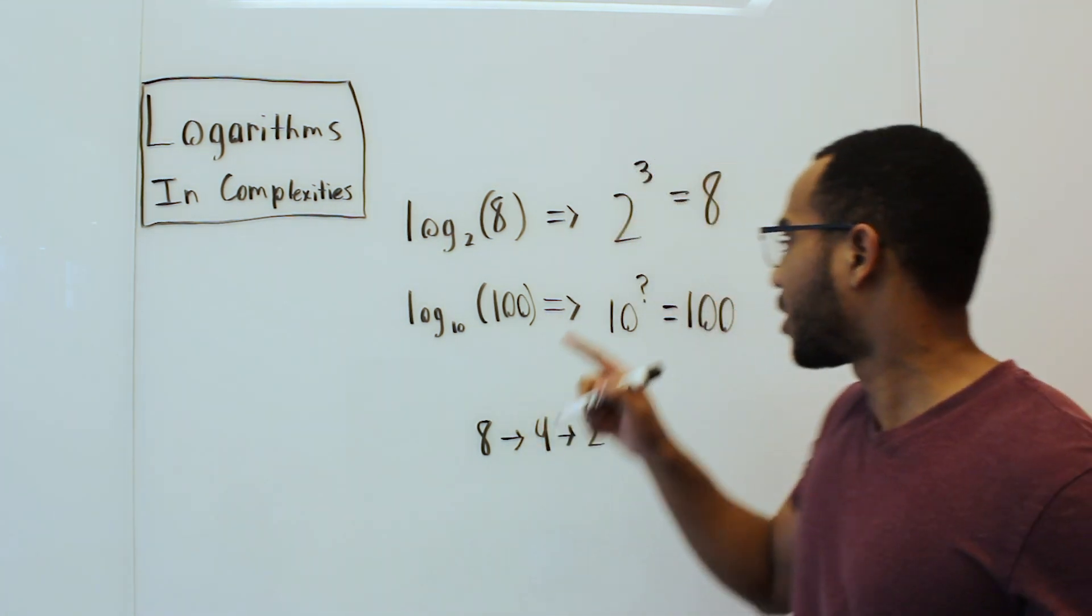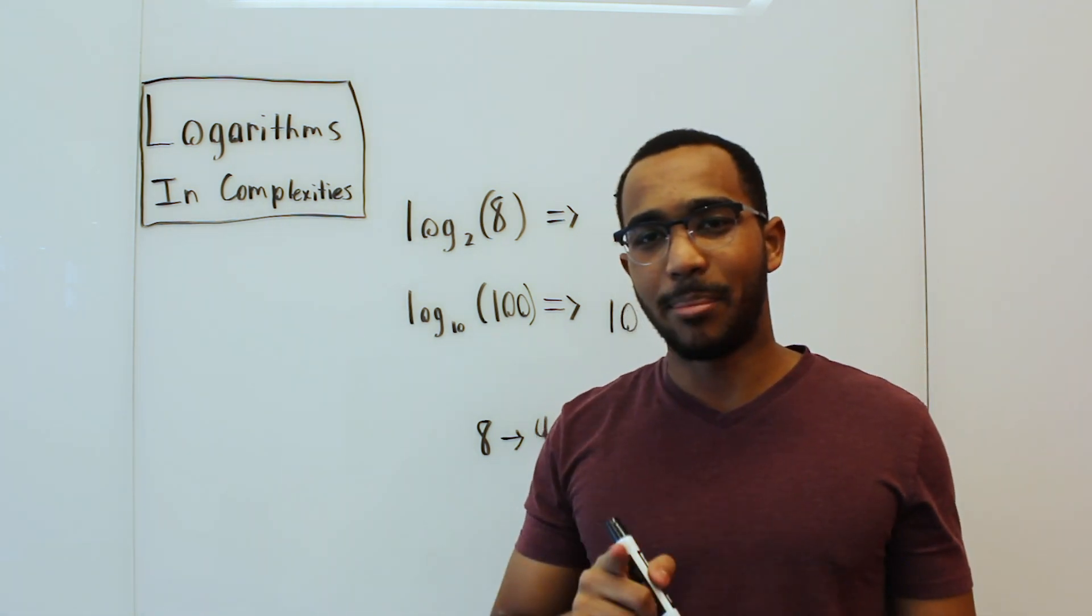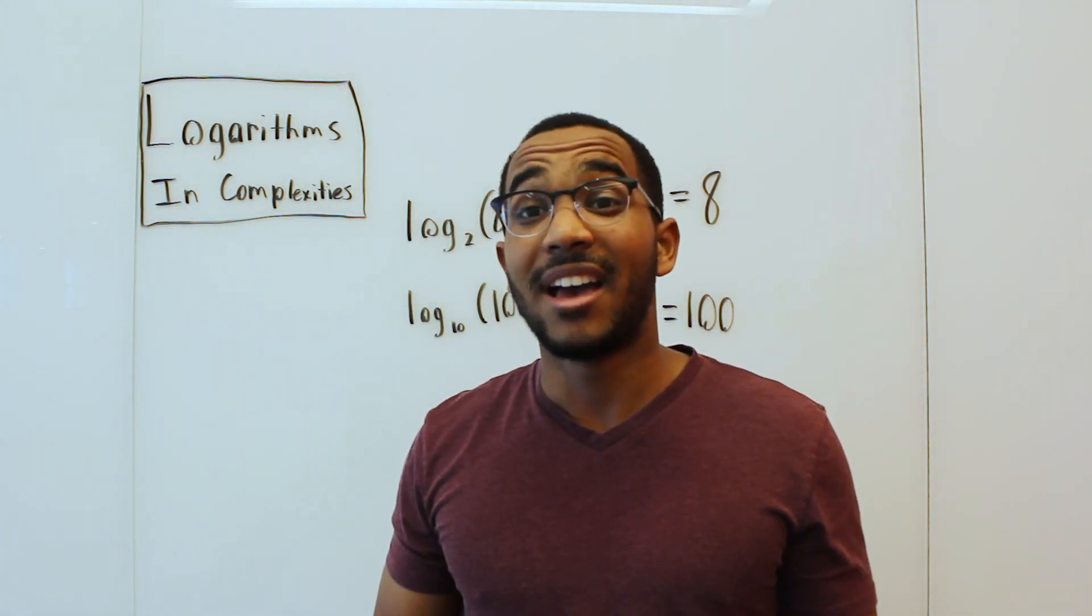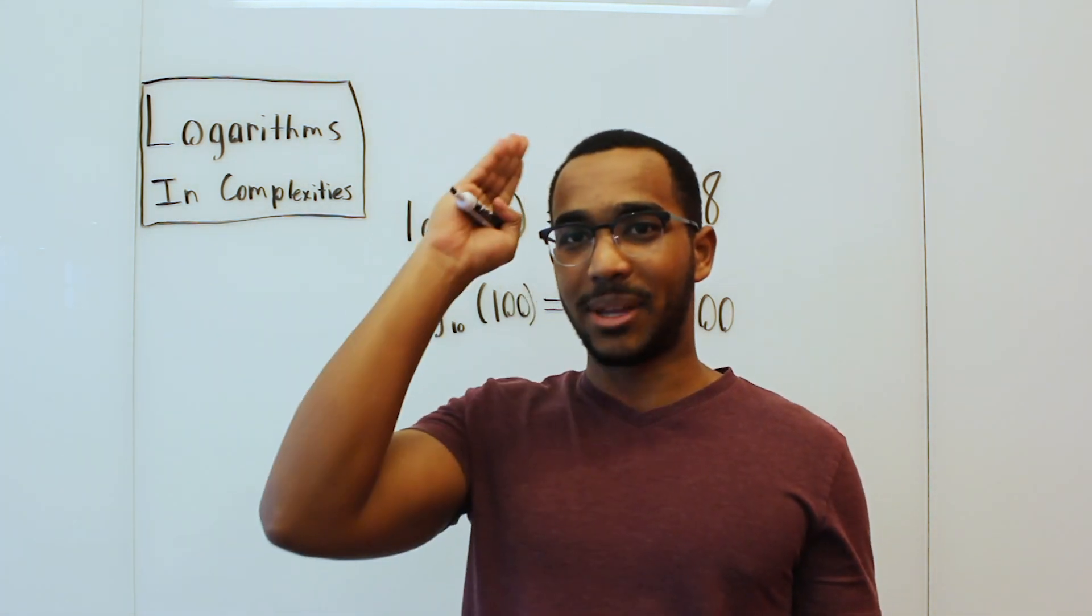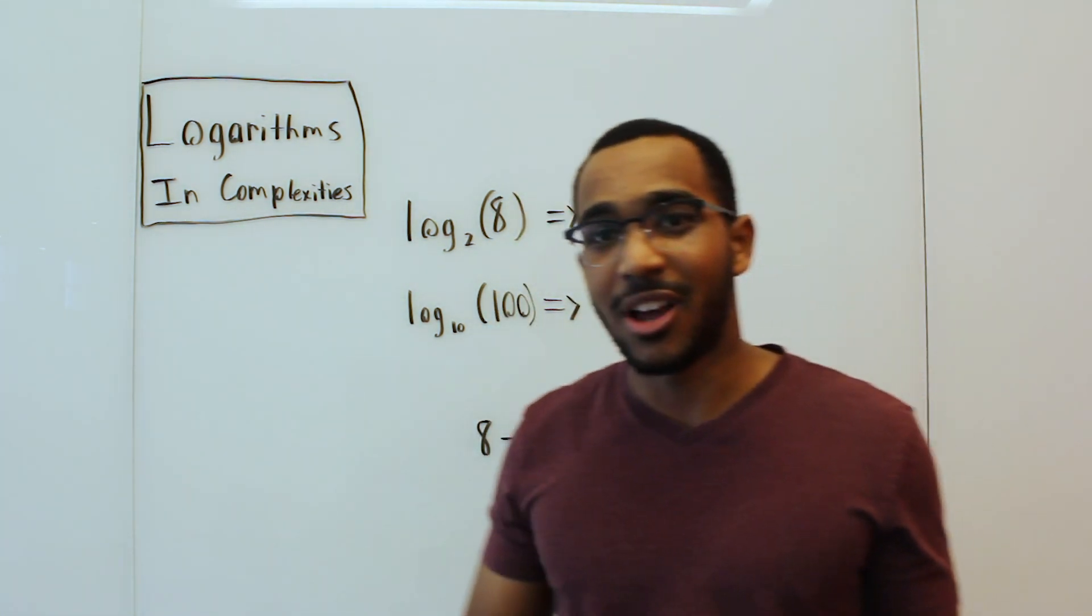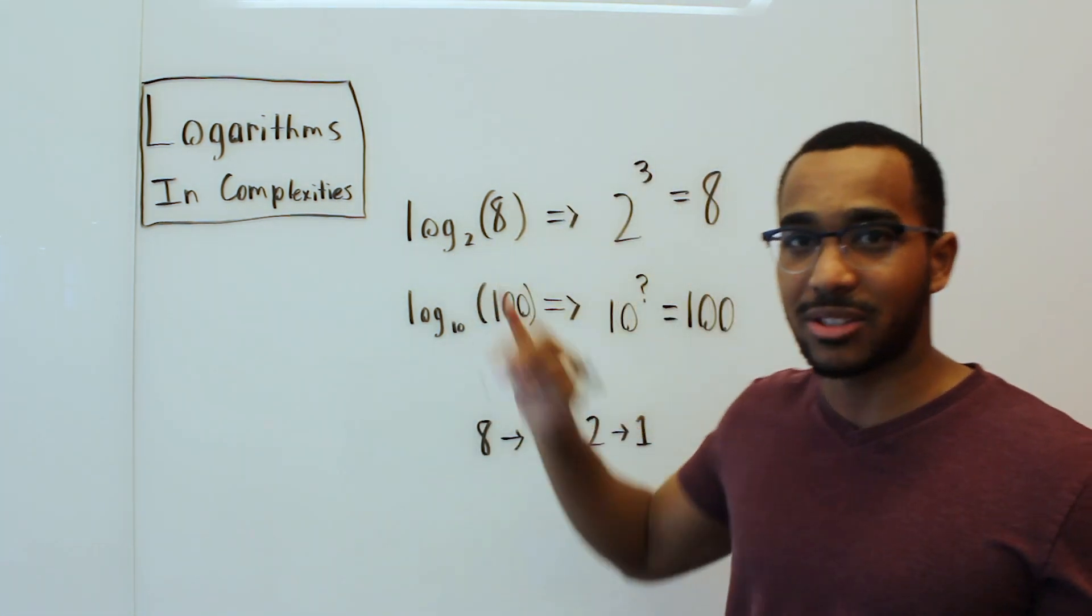This 3 looks familiar. That's the 3 we just got there. That's why a log base 2 is considered cutting in half. We are performing divisions by 2. So a logarithm is an expression of a halving when it is under the base of 2.